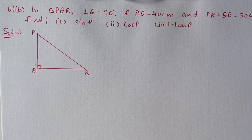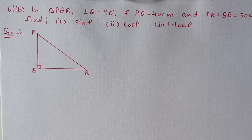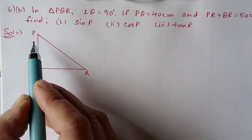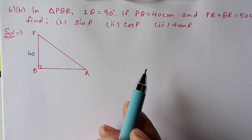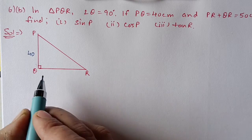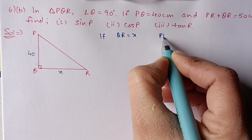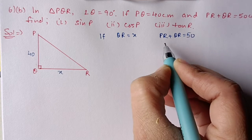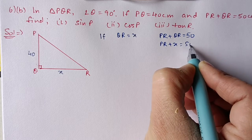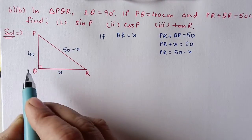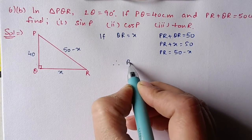Next, question 6 part B: In triangle PQR, angle Q is 90 degrees, PQ is equal to 40 centimeters and PR plus QR is equal to 50 centimeters. Find sin P, cos P, and tan R. We draw a right angle triangle with Q at 90 degrees, PQ given as 40 centimeters. Let QR equal x, then PR plus QR equals 50, so PR equals 50 minus x.